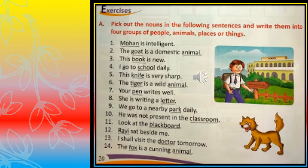The first sentence is: Mohan is intelligent. Here, Mohan is the naming word because it is the name of a person. The goat is a domestic animal — here, goat and animal are both naming words. This book is new — book is a naming word. I go to school daily — school is a naming word. This knife is very sharp — knife is a noun. The tiger is a wild animal — tiger and animal are both nouns.